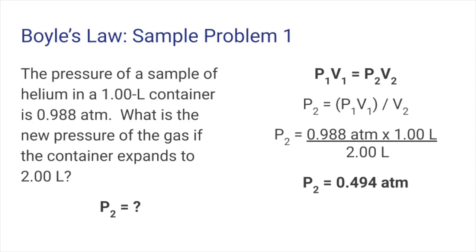Taking 0.998 times 1 divided by 2 will give us 0.494 atm. Without really doing any calculation, we could have predicted this pressure because the volume was doubled, so the pressure would be halved. That's an inversely proportional relationship.